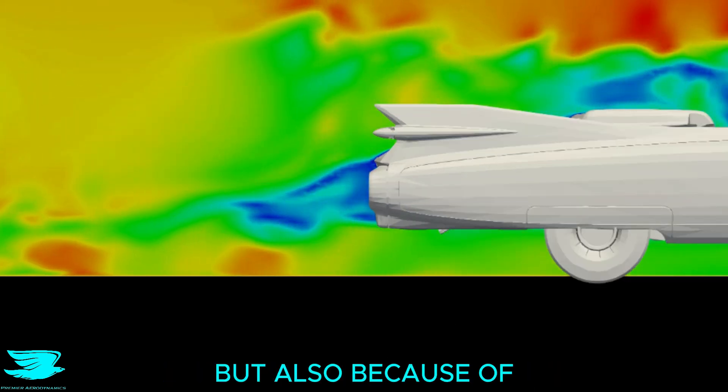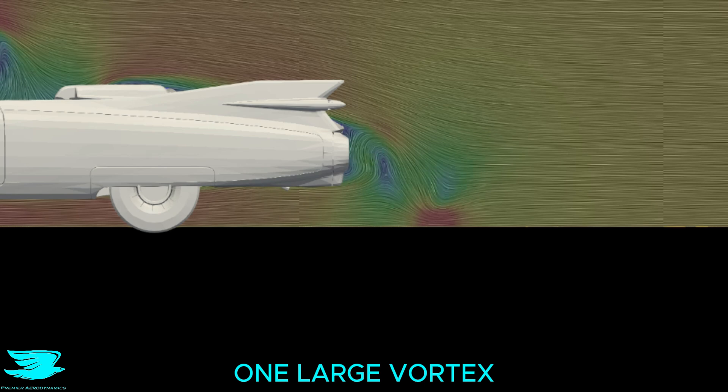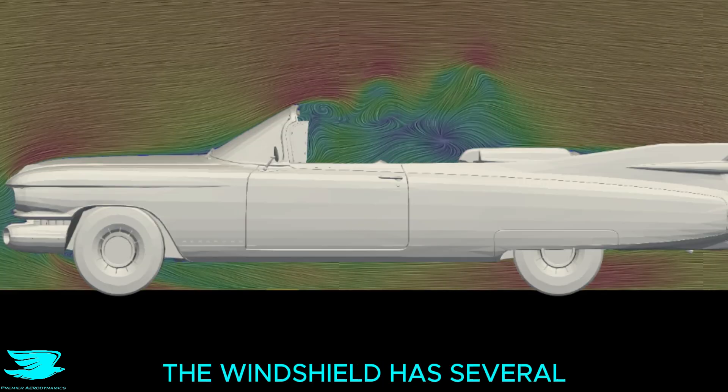Partly because of the rear, but also because of the very large wake coming from the windshield. You can see that the rear wake really only has one large vortex, while the wake from the windshield has several.